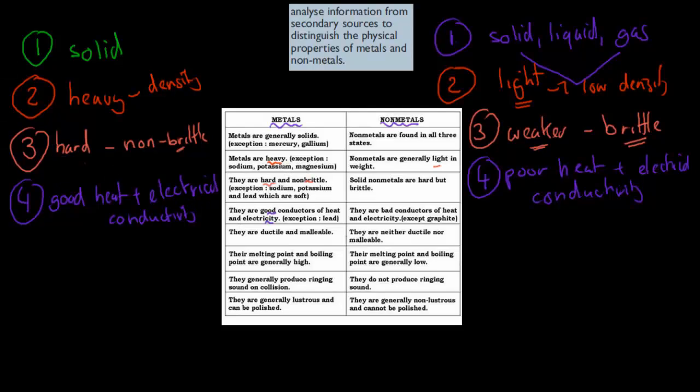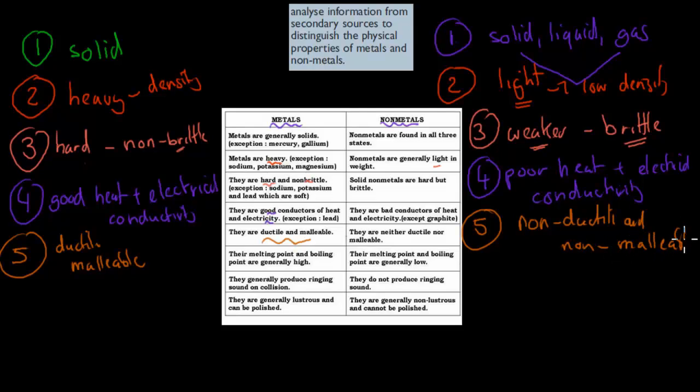Next is they are ductile and malleable. That's for metals. Ductile means we can make it into wire, and malleable means we can make it into sheets. So they're very ductile and very malleable. Whereas non-metals are non-ductile and non-malleable. That means we can't put them into either wires or sheets very well. And that makes sense because I said earlier they're brittle. So you try to make them into sheets, they just break. Whereas we can do that for the actual metals.